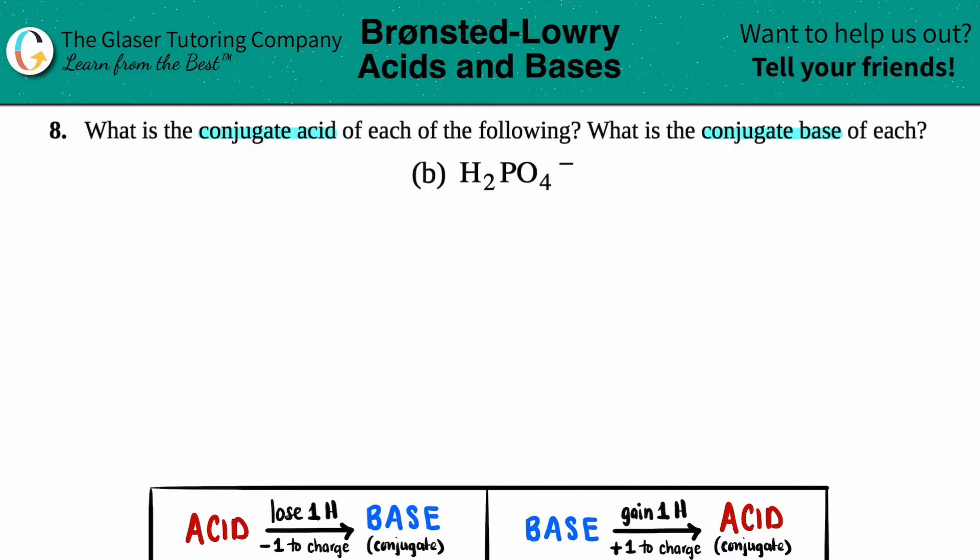When you can find both the conjugate acid and a conjugate base from a single ion, that means in some situations this can act as an acid, and in other situations it could act as a base. I know that H2PO4- can act as an acid, because any time you see hydrogens in the front of an ion or a molecule, that's an acid.